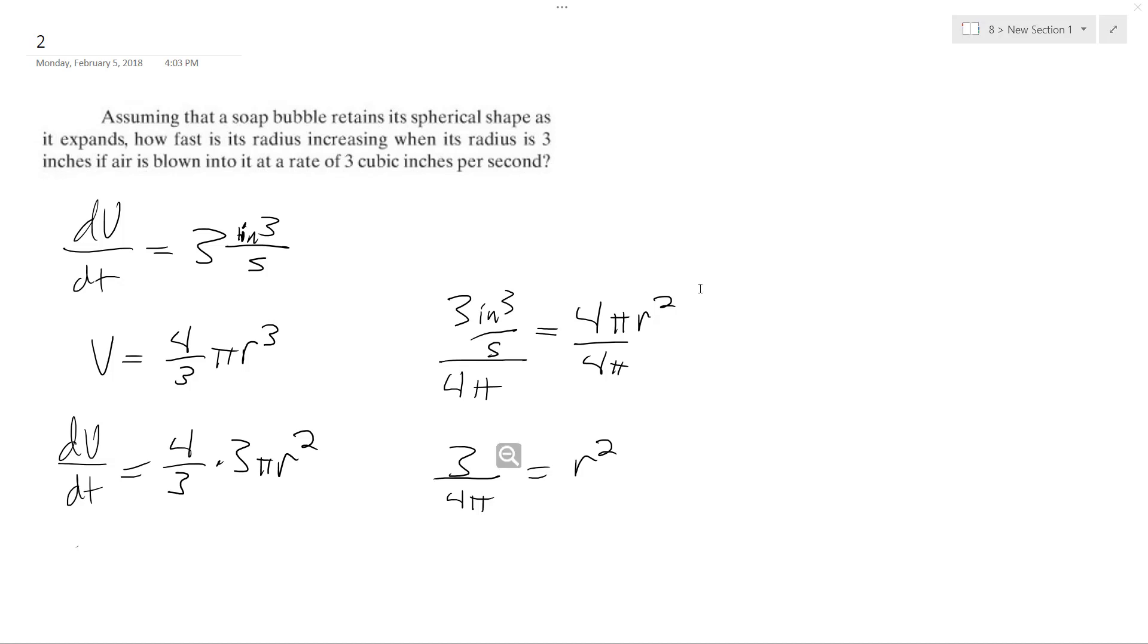I made a mistake here. Well, not a huge mistake, but I forgot to include the rate the radius is increasing, dr/dt. Because we have the volume dV/dt over here. And then we sub in three inches. So we have three over four pi is equal to three squared dr/dt, which is nine.